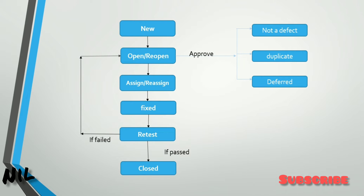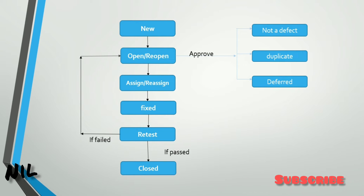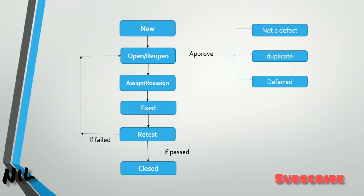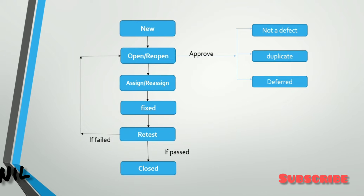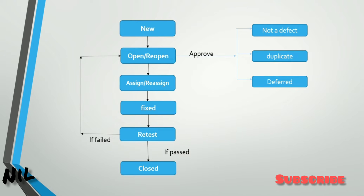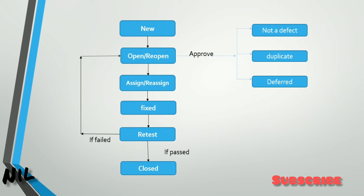There are many stages in the defect life cycle: New, Open, Reopen, Assign, Reassign, Fixed, Retest, Close, Not a Defect, Duplicate, and Deferred. This is the full process of the defect life cycle.